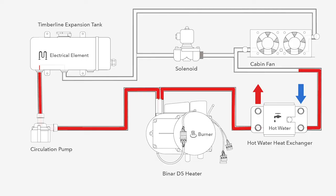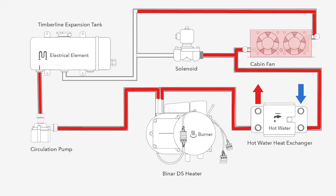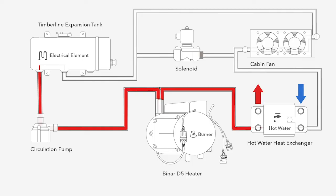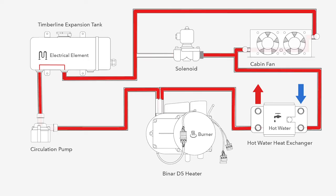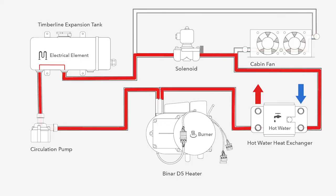The hot glycol then goes from the heat exchanger to the solenoid. Imagine your solenoid as a closed gate. When you want to heat the coach, the solenoid stays closed and the glycol goes to the cabin fans, which heat the coach to whatever your thermostat is set at. In a summer loop, when the glycol gets to the solenoid, the solenoid opens its gate and allows the glycol to flow through, bypassing the cabin fans. At its core, a winter loop means creating hot water and heating the coach, while the summer loop means heating hot water without heating the coach itself.